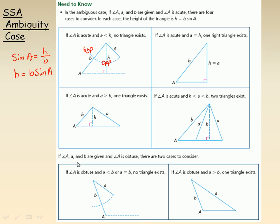There aren't two possible triangles if angle A is obtuse — over 90 degrees — but there are still two cases to consider. If you have an angle, the side opposite it, and another side, and angle A is obtuse: if side A is smaller than side B, then no triangle exists — A isn't long enough to complete a triangle. The only way a triangle can exist is if A is larger than B, in which case there's only one triangle you can draw. And that's the end of the sine law note.